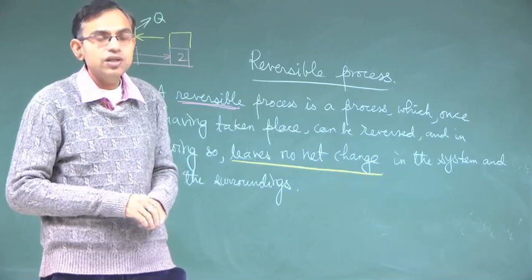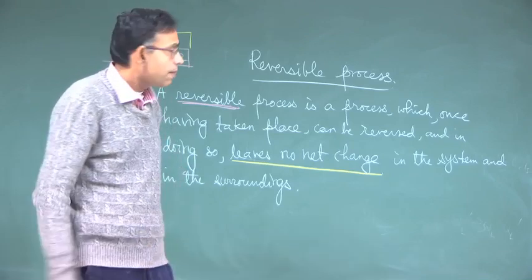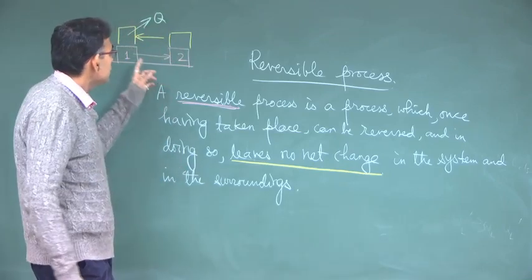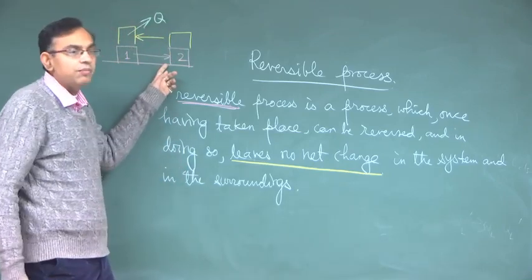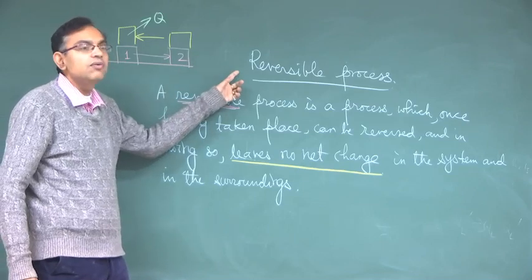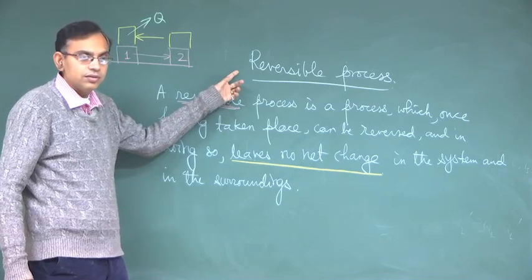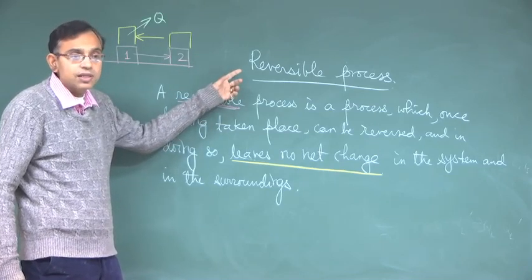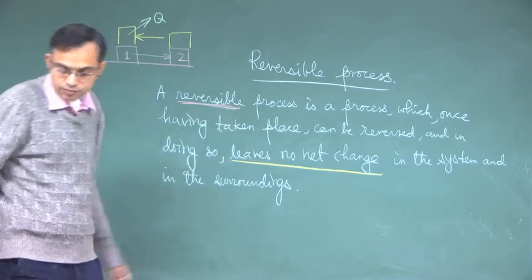This shows that friction can make a process deviate from a reversible one — that is called an irreversible process.